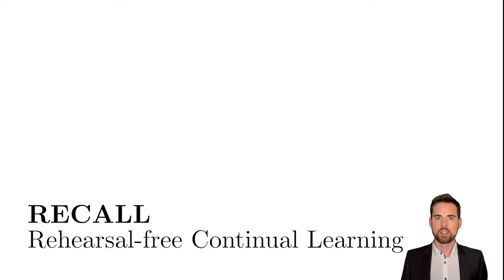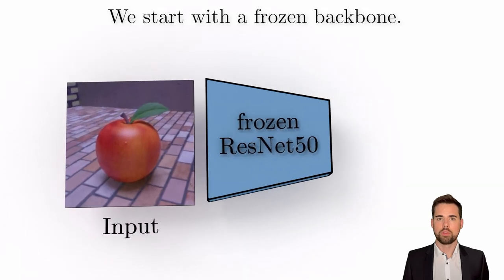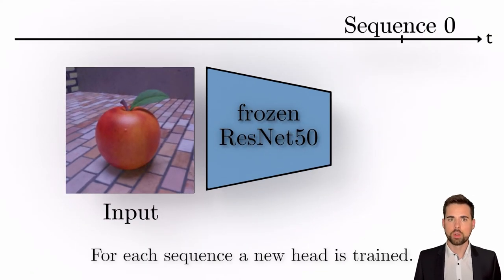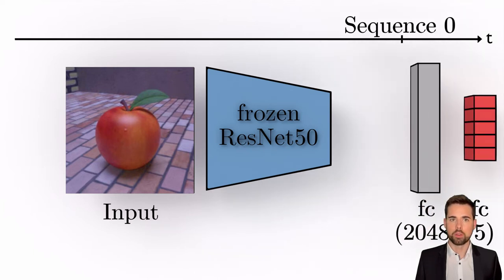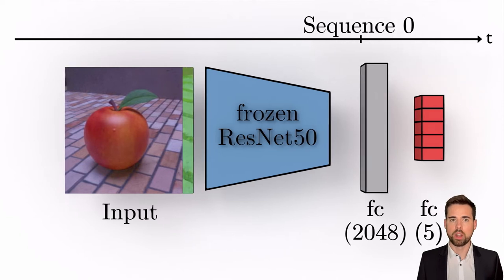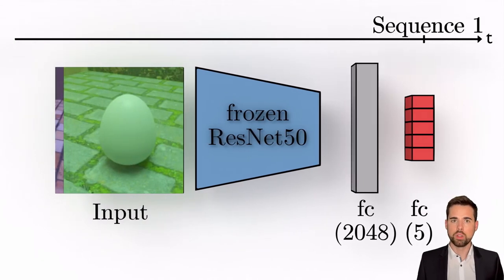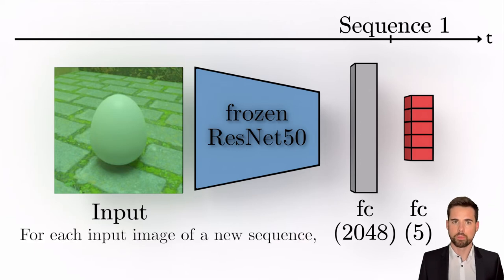We tackle these challenges with our approach for rehearsal-free continual learning called RECALL. We start with a frozen ResNet-50 backbone. For each sequence, a new head is added and trained. Therefore, one does not have to know the number of classes beforehand. In addition, each sequence has its fully connected layer, so it can learn features to distinguish between the classes within each sequence.